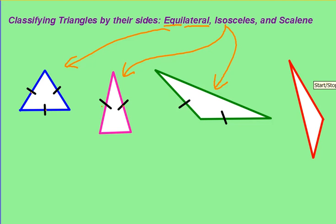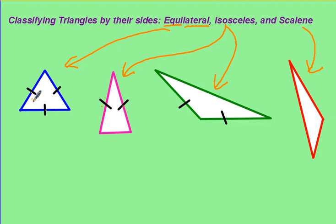Or it could be scalene, which means no sides are equivalent. One nice thing about classifying by their sides is you automatically know something about their angles. If you have three sides that are equivalent, you also have three matching angles. If you have two sides that are congruent, you also have two congruent angles.